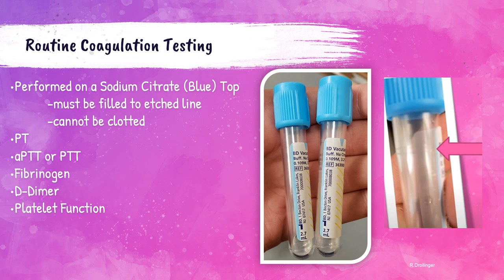Coagulation testing is performed on light blue top tubes, which contain sodium citrate anticoagulant to prevent the blood from clotting. It is absolutely imperative that the blood is filled to the etched fill line on the tube. The reason is there is a very specific anticoagulation ratio: nine parts blood to one part sodium citrate. If the blood is not filled to the line, the ratio will give incorrect results — this is not a suggestion, it is a requirement, and the tube must be redrawn. Also, if a clot is present in the tube, it must be redrawn. Tests run on light blue top tubes include PT, APTT, fibrinogen, D-dimer, and platelet function.